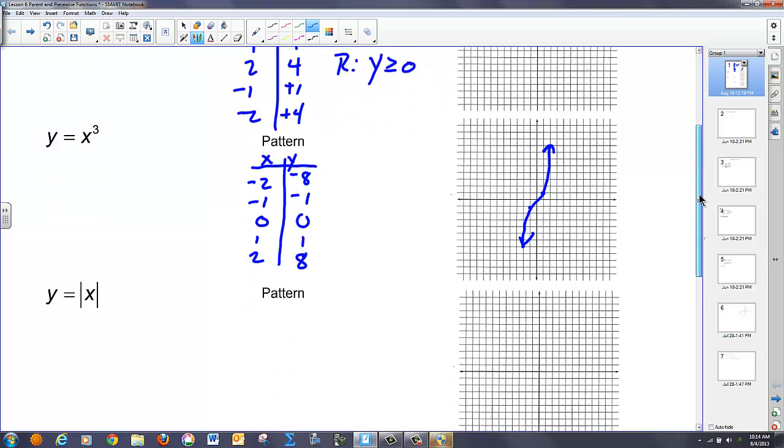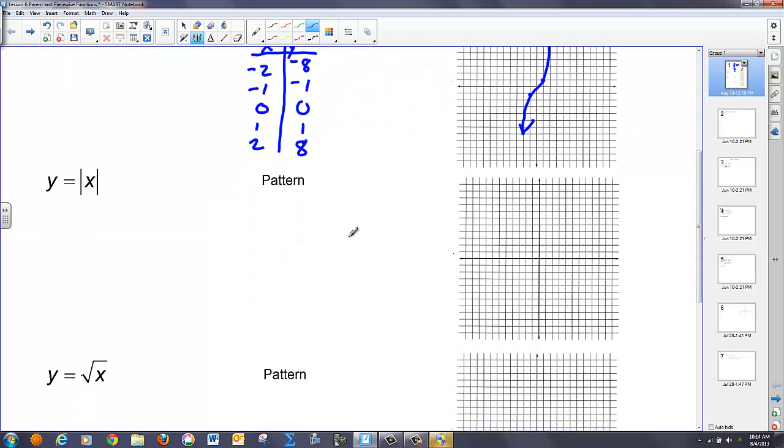We go to our next figure, which is an absolute value. Again, plugging in some small numbers. Let's go negative 2, negative 1, 0, 1, and 2 again. We get out 2, 1, 0, 1, 2. As you can see, this takes on linear shapes on both sides, unlike the parabola, which is curved. This is straight, and it creates some form of a V pattern.